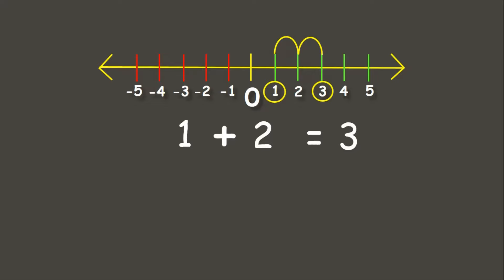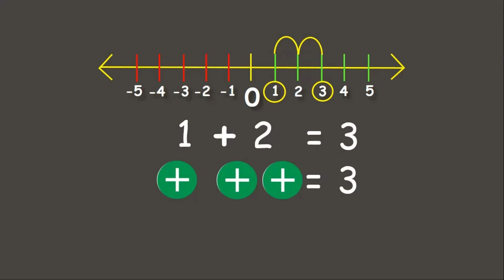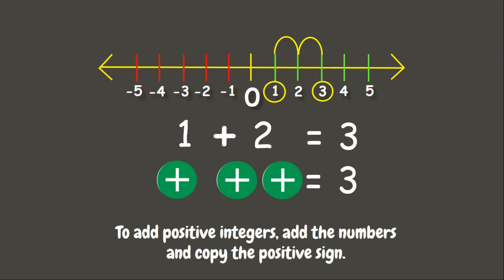It means that positive 1 plus positive 2 equals positive 3. Now let us try to solve this using some counters. We have 1 positive chip and 2 positive chips. If we count them all together, we have 3 positive chips. It means that when we are adding positive integers, we simply add the numbers and copy the positive sign — but since it is already positive, we may or may not write the positive sign.